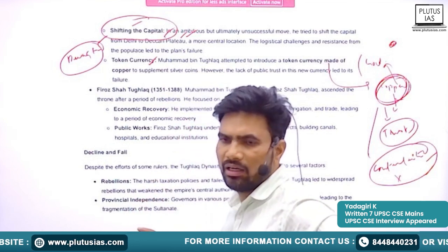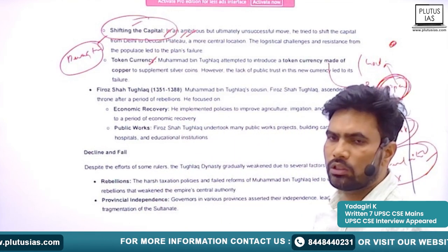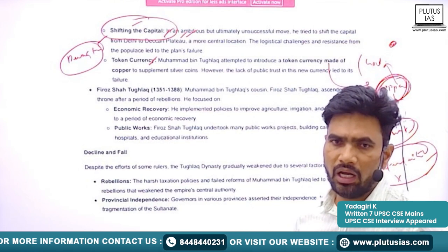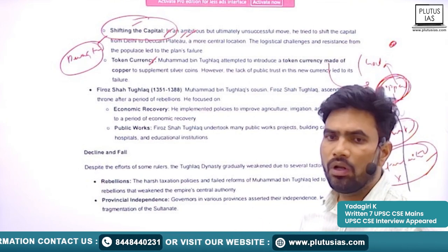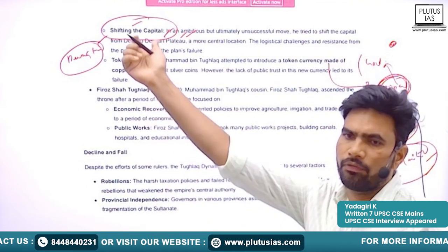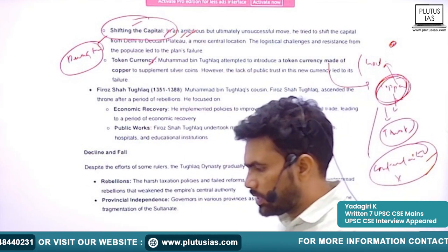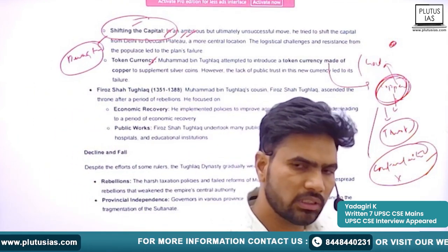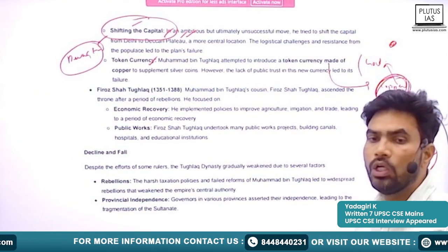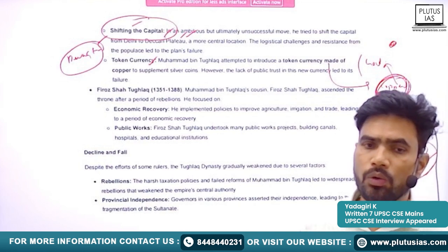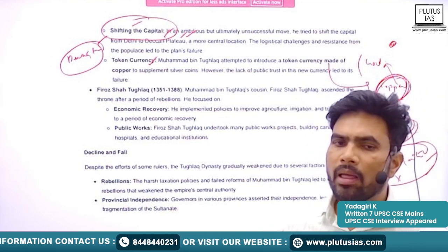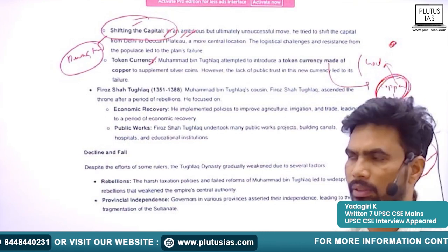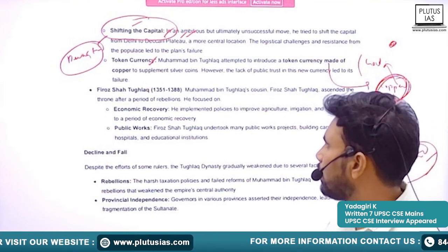Other experiments also, like the Khorasan expedition, were also failures. When you study history as an optional, you will study in detail about the experiments of Muhammad bin Tughlaq. From your side also, try to know more about the experiments of Muhammad bin Tughlaq.